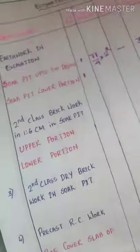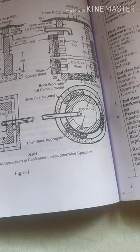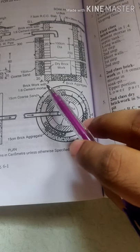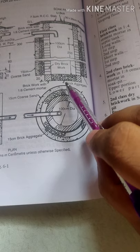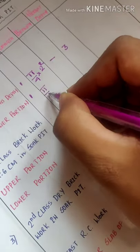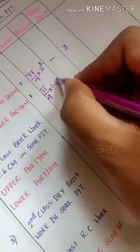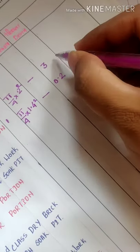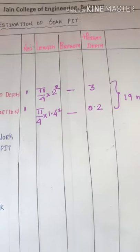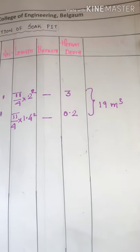Then what is the diameter of the lower portion? The lower portion diameter is 20 + 100 + 20, so the diameter of the lower portion is 1.4 meters. So this is pi/4 × 1.4² and depth is 0.2 meters. The total quantity for earthwork in excavation comes out to be 19 cubic meters. So we have the quantity for earthwork in excavation.